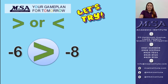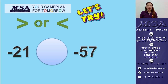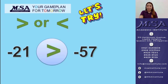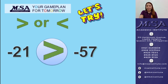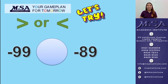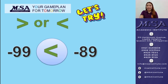Next, we have negative 21 and negative 57. Is it greater than or less than? The answer is greater than: negative 21 is greater than negative 57. Next, we have negative 99 and negative 89. The correct answer is less than: negative 99 is less than negative 89.